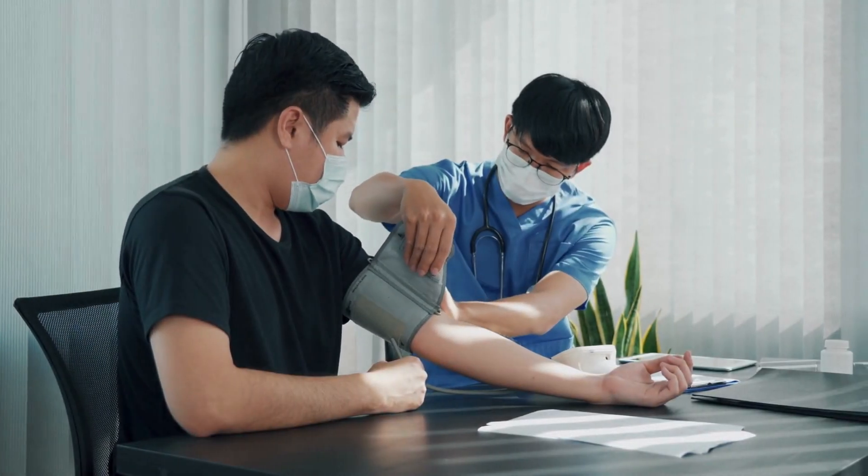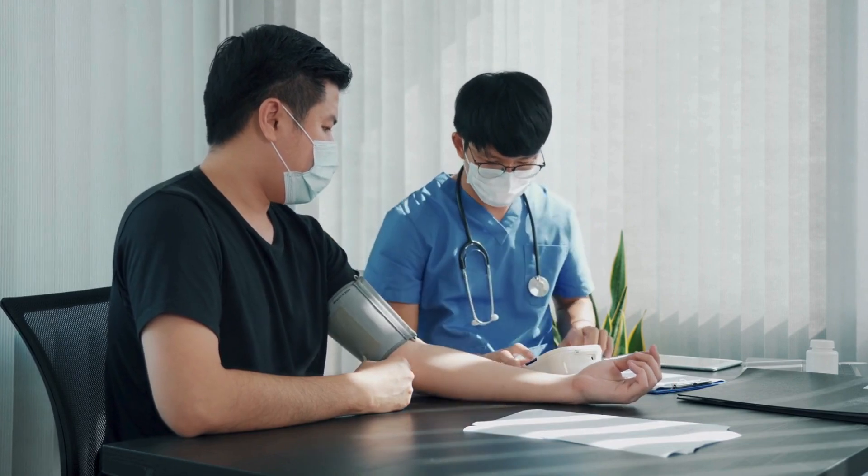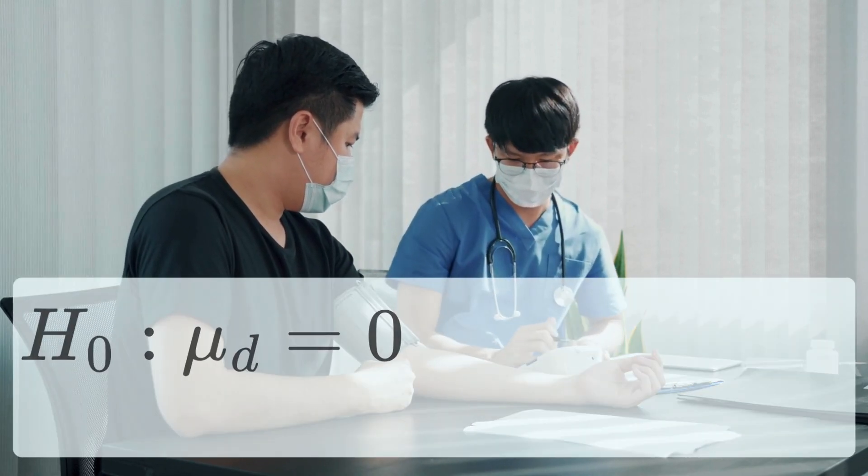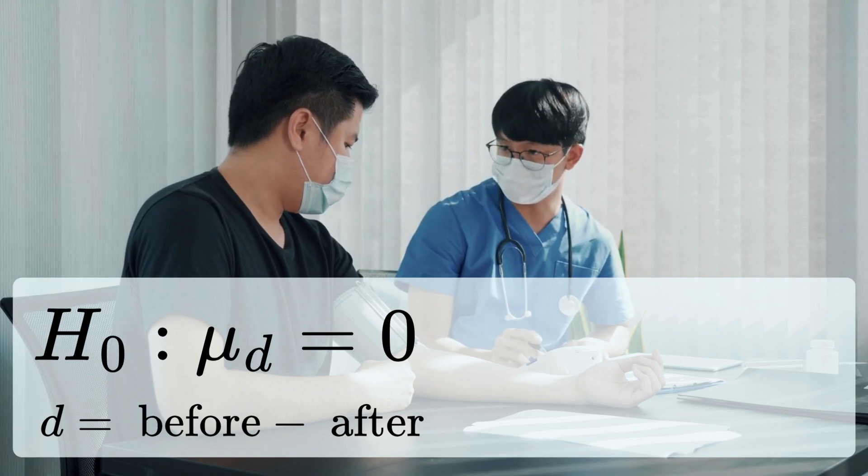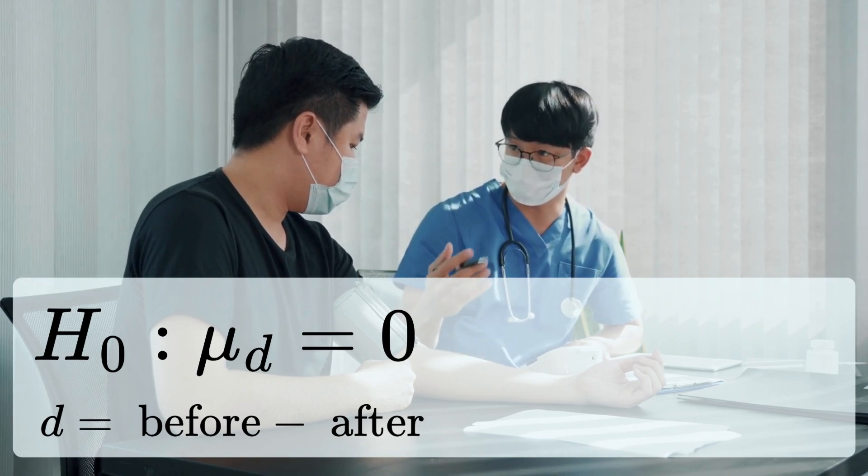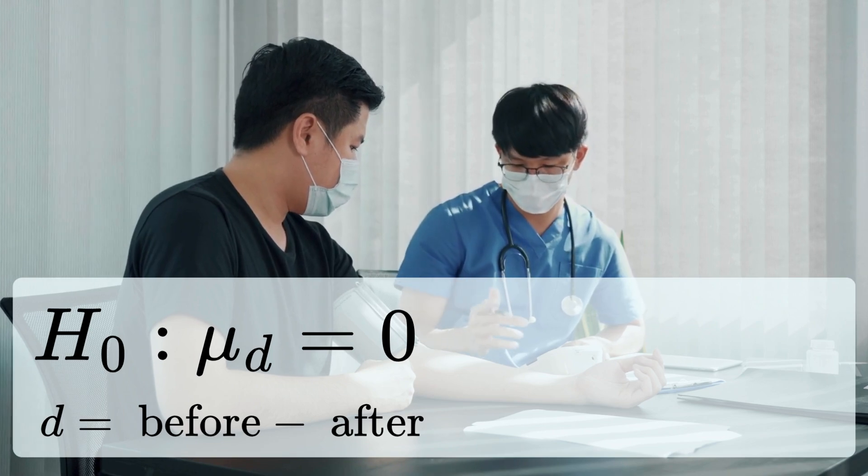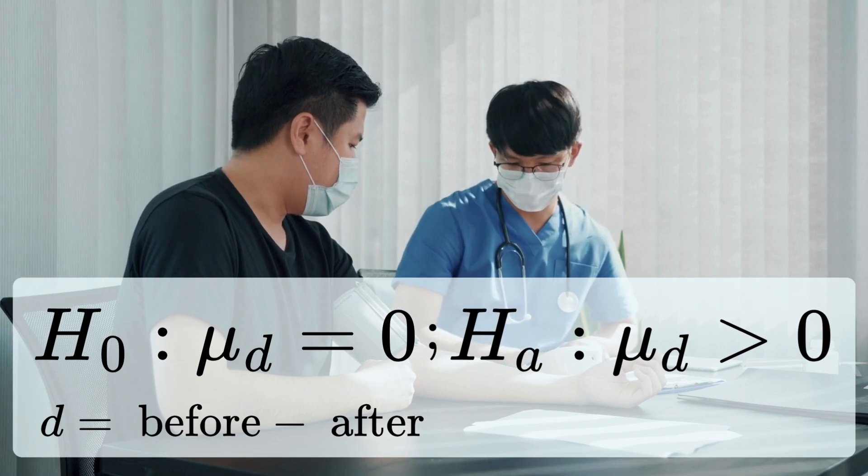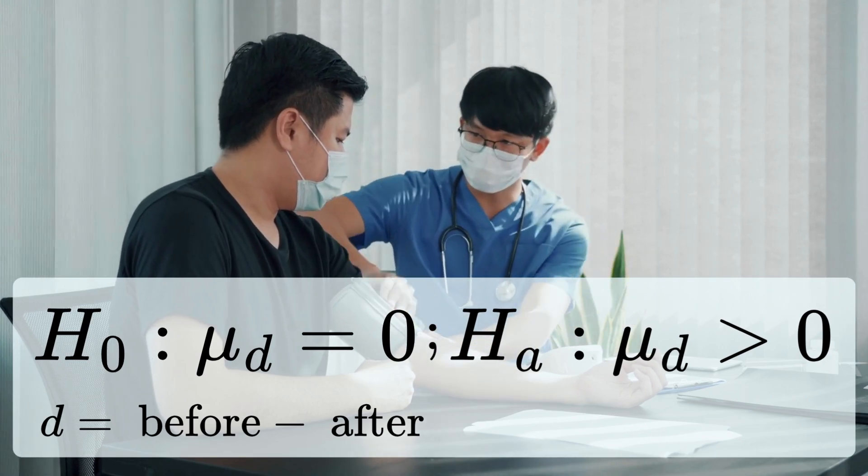For instance, let's say you want to test whether a new drug lowers blood pressure. The null hypothesis states that there is no difference in the average blood pressure of patients before and after taking the new drug, while the alternative hypothesis states that the average blood pressure after taking the drug is lower.